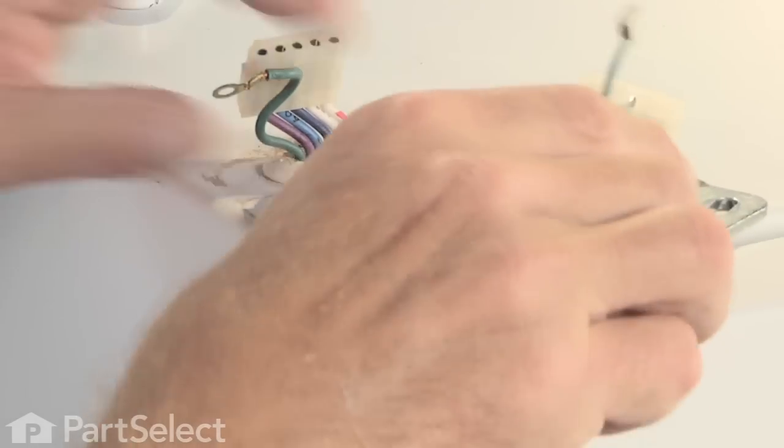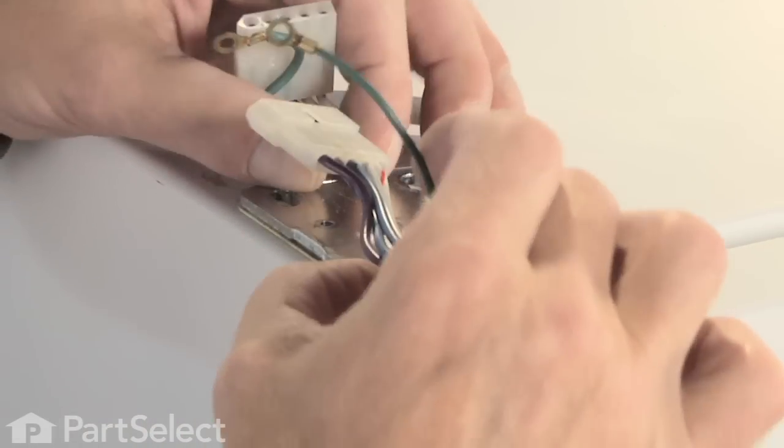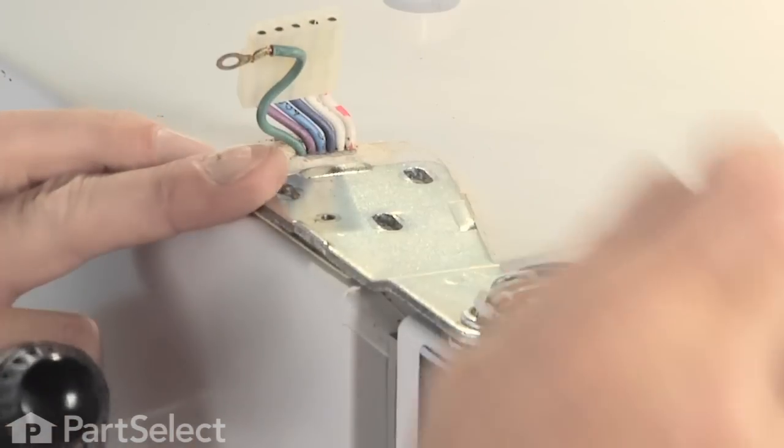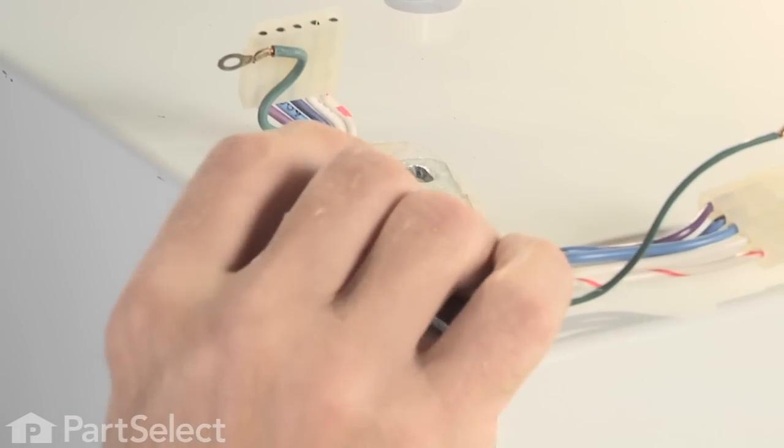Now with the door back in place, slide the hinge over to line it up. Again we'll start the screws by hand, so that we don't cross-thread them.